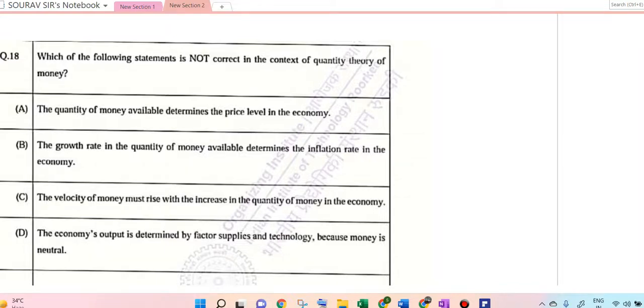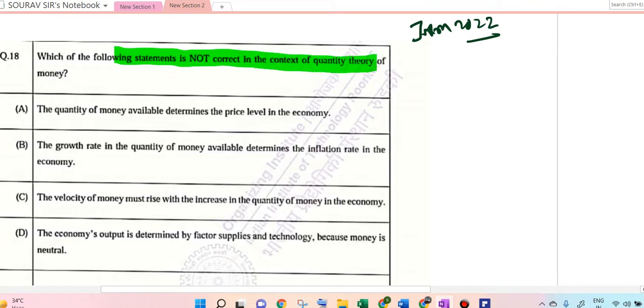Hello students, today's video is JAM 2022 solutions of economics. Which of them is not correct in the context of quantity theory of money? So quantity theory of money is MV equal to PQ. This also takes into one special thing, that is velocity of money.